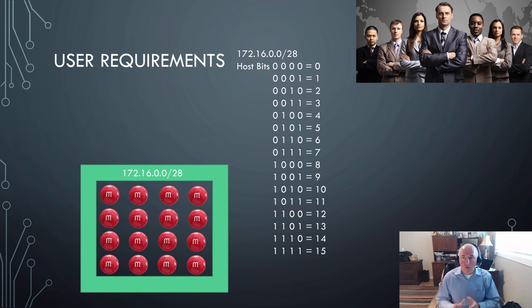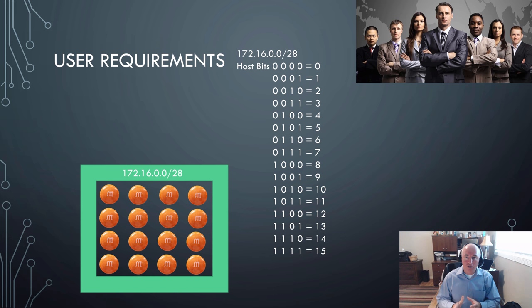On the right, you'll see the 172.16.0.0/28 network. Actually, the host bits, there's only four of them, right? If there's 28 network bits, so my CIDR notation tells me where the host bits begin.